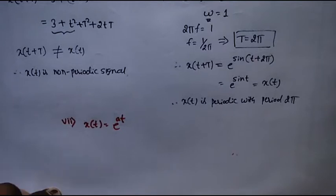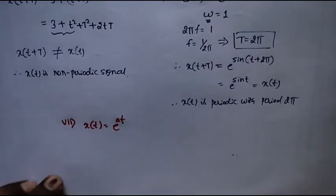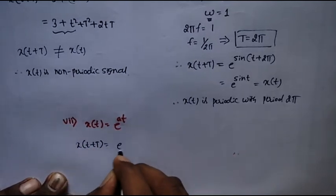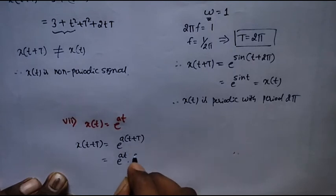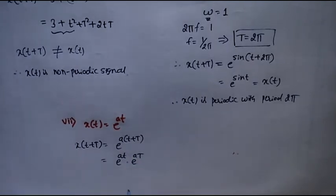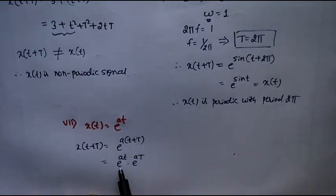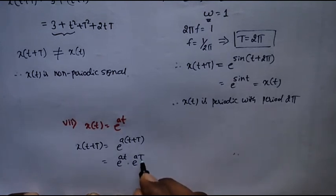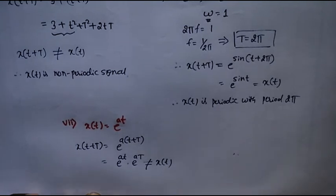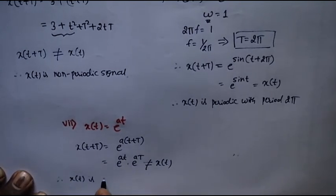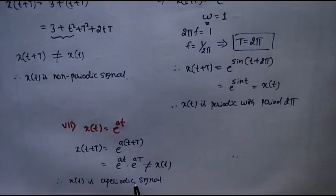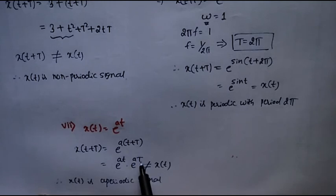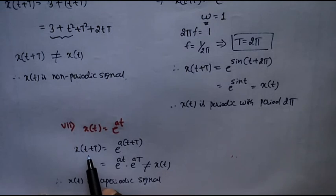We will consider another example. We calculate x(t + T) = e^(a(t + T)) = e^(at) · e^(aT). We can observe that x(t + T) will equal x(t) only if a = 0 or T = 0, because in that case the term e^(aT) will become 1. Otherwise this is not equal to x(t). Therefore x(t) = e^(at) is a non-periodic signal. It will be periodic only if either a = 0 or T = 0.